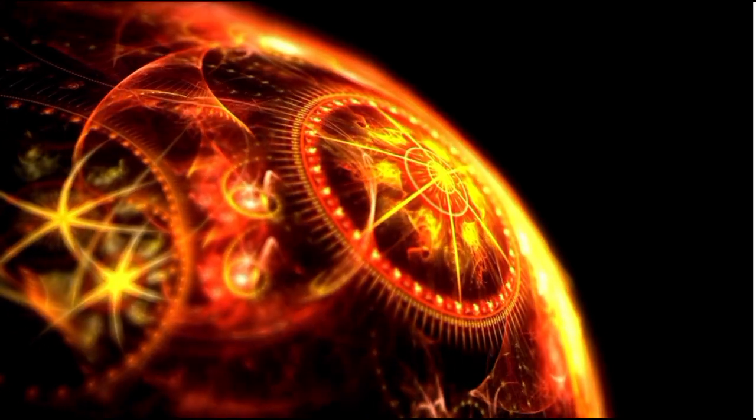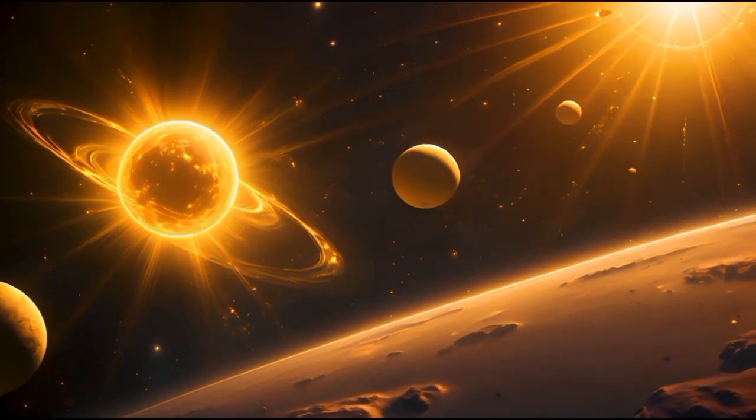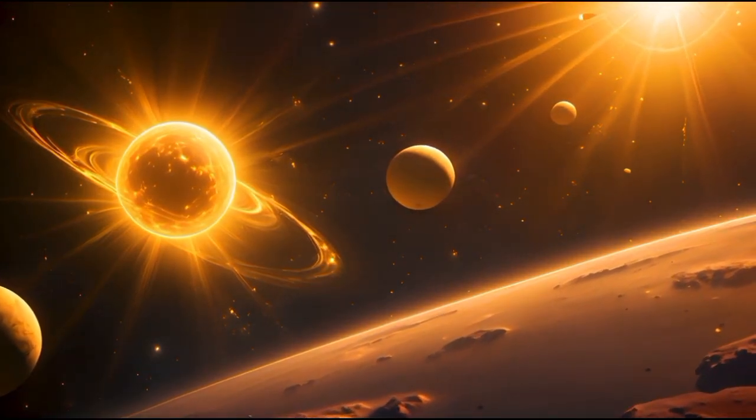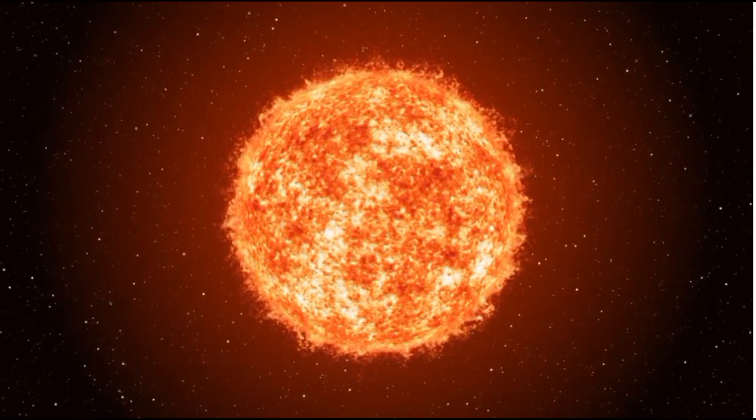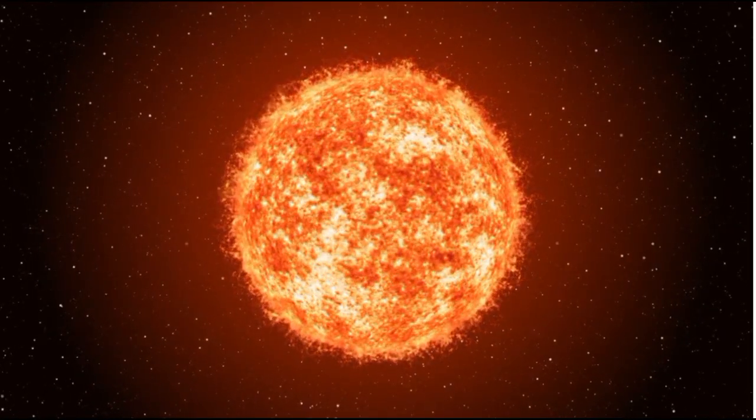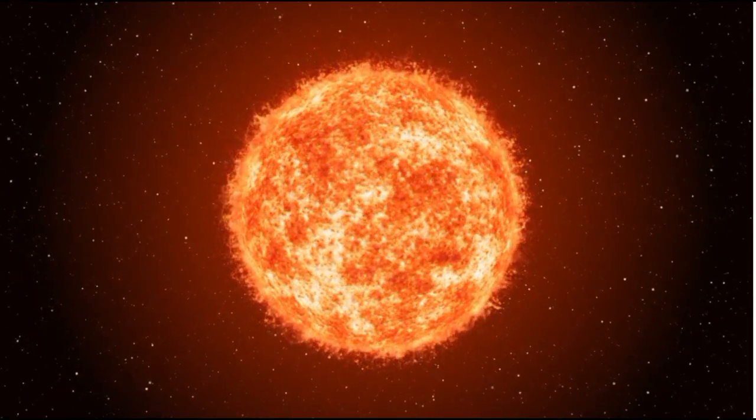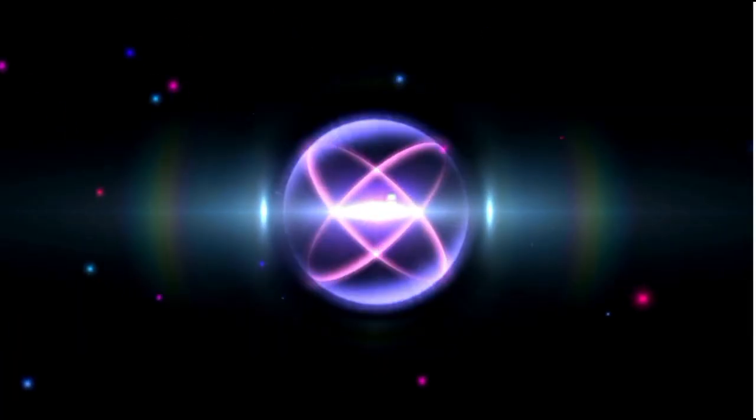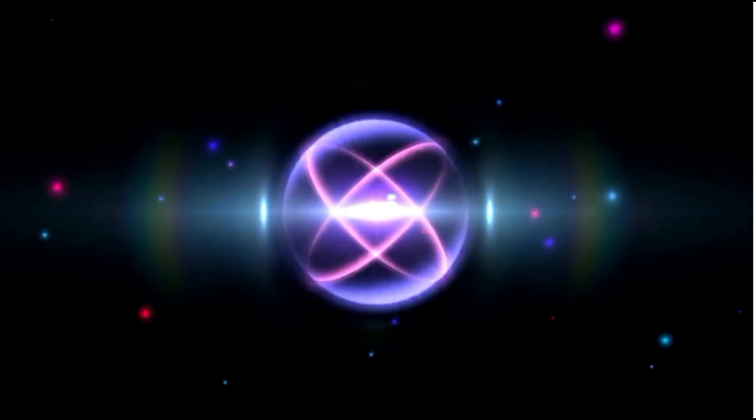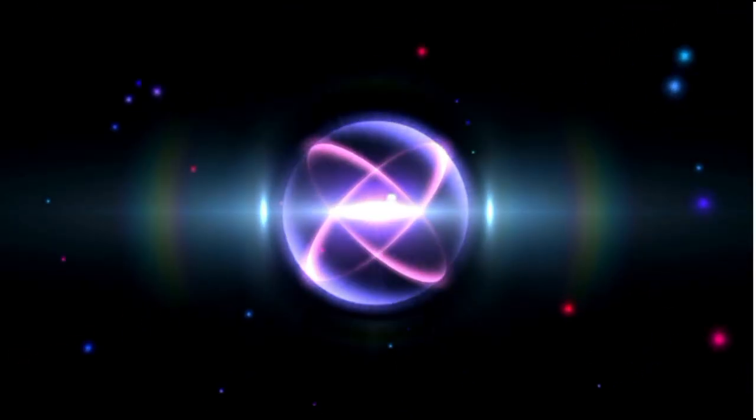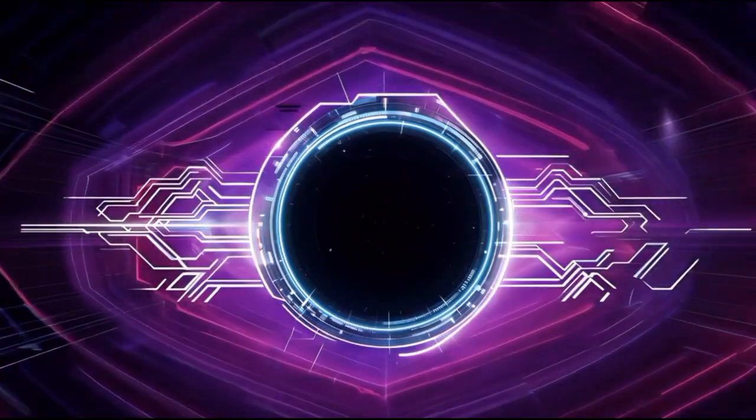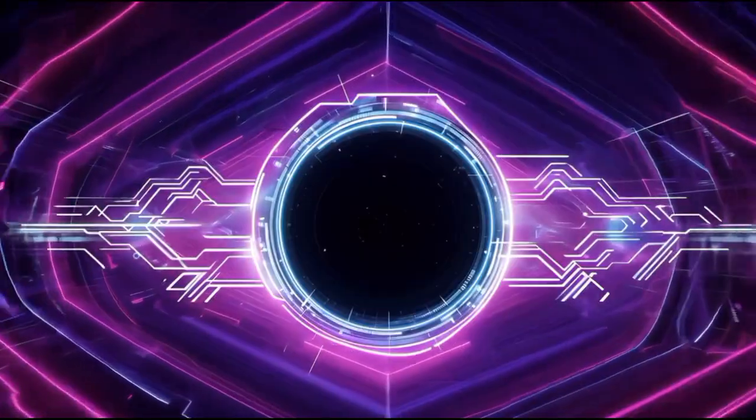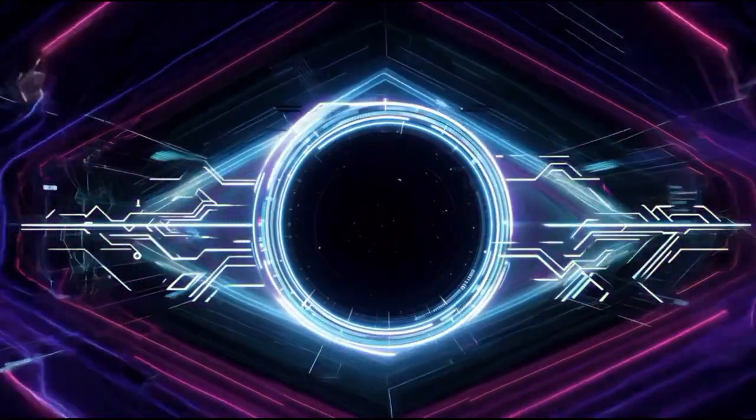Proxima Centauri is part of the Alpha Centauri triple star system. This system includes Rigel Cantaurus, also known as Alpha Centauri a, and Alpha Centauri b. Together, these stars make up the closest star system to our own. The two stars, Rigel Cantaurus and Alpha Centauri b, form a binary system.